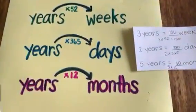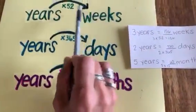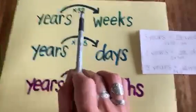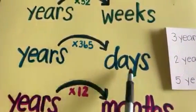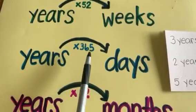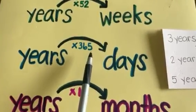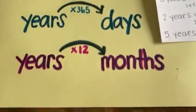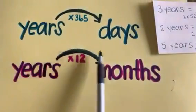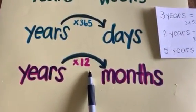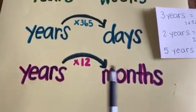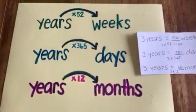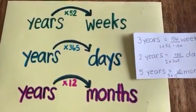So just to review, to go from years to weeks times by 52, because there's 52 weeks in one year. To go from years to days, multiply by 365, because there are 365 days in one year. To go from years to months times by 12, because there's 12 months in one year. Hopefully you guys found this helpful and you will be able to start converting.